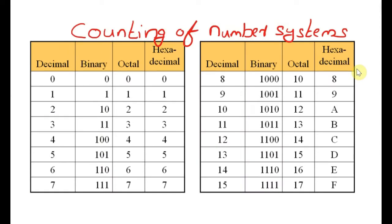Now we will see how to count in each number system. In the decimal number system, we already know how to count — as in daily life, we count 0, 1, 2, 3, and so on up to 8, 9. After 9, we have used all 10 symbols, so we reuse them in combinations: after 9 comes 10, 11, 12, and so on up to 19, then 20, 21, 22, and it continues. This is the familiar counting in the decimal number system.